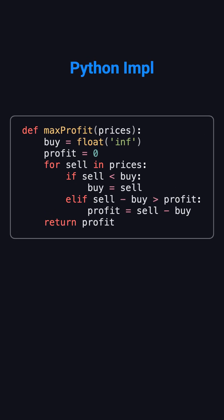This Python code follows exactly what we just went through. Buy tracks the lowest price, and profit tracks the maximum profit. Each day's price is sell. If it's lower than buy, we update buy. If selling today gives higher profit, we update profit. At the end, we return the maximum profit. If prices keep falling, there's no chance to make money, and the function returns zero.